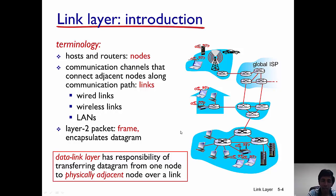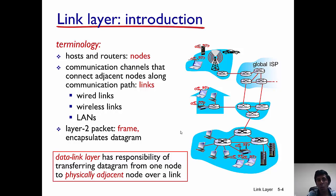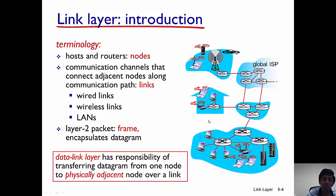The layer-2 packet is called a frame, and it encapsulates a layer-3 packet — an IP packet or datagram. The link layer's responsibility is to transfer a datagram from one node to the physically adjacent node over the link. For example, two routers connected by a wired link: the data link layer transfers data from one node to the other.